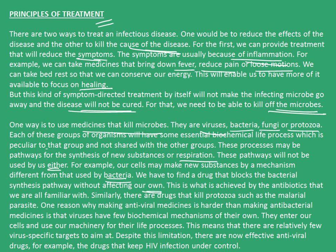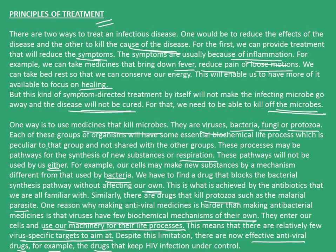Similarly, there are drugs that kill protozoa such as the malarial parasite. One reason why making antiviral medicines is harder than making antibacterial medicines is that viruses have few biochemical mechanisms of their own. They enter our cells and use our machinery for their life processes — that is, they are dependent on our cells for their living. This means that there are relatively few virus-specific targets to aim at. Despite this limitation, there are now effective antiviral drugs, for example, the drugs that keep HIV infection under control.